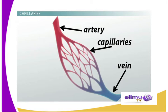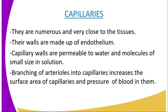This provides the least distance for diffusion of substances between the capillary and the cells. The capillary walls are permeable to water and the molecules of small size in solution. You can see how the capillary looks like from our diagram on the screen. Branching of arterioles into capillaries increases the surface area of the capillaries. The pumping force from the heart together with the narrow lumens of the capillaries exerts a high pressure that forces the fluid part of the blood to filter out of the capillary walls into the intercellular space, forming tissue fluid. Tissue fluid is normally formed through ultrafiltration of the blood, also known as pressure filtration.